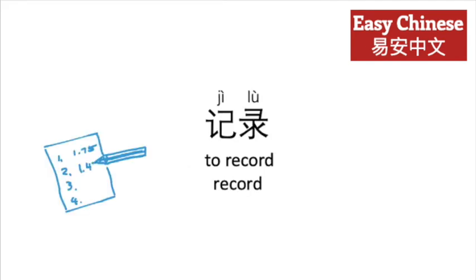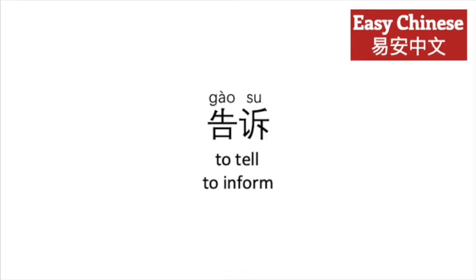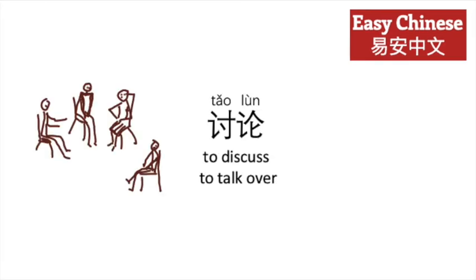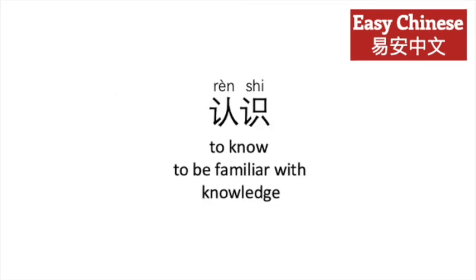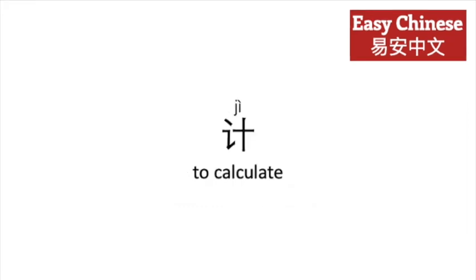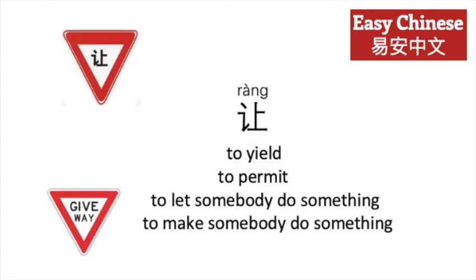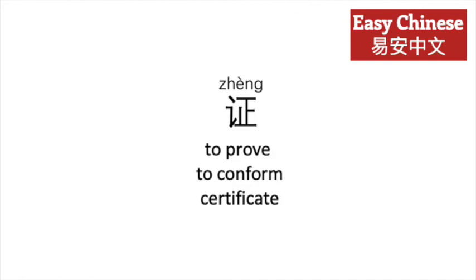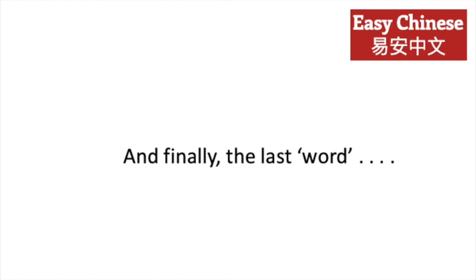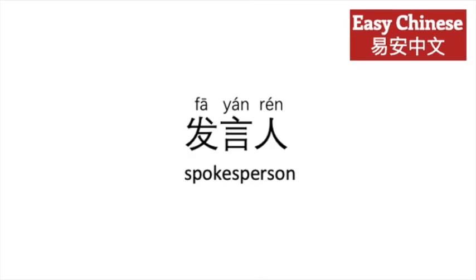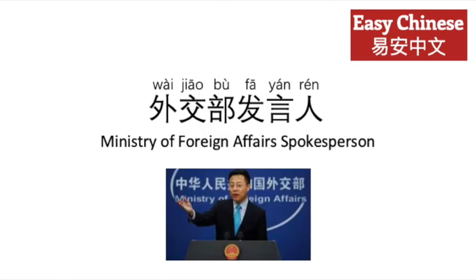Jìlù, to record or a record. Gàosù, to tell, to inform. Tǎolùn, to discuss, to talk over. Rèn, to know, to be familiar with, knowledge. Suàn, to calculate, as in diànnǎo, computer. Ràng, to yield, to permit, to let somebody do something, to make somebody do something. Zhèng, to prove, to confirm, certificate. And finally, fāyán rén — send out words, person — spokesperson.